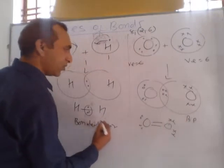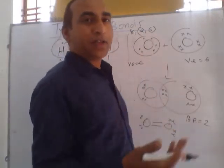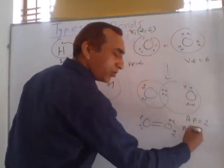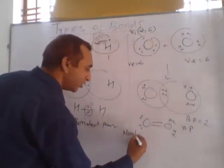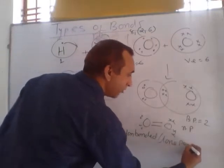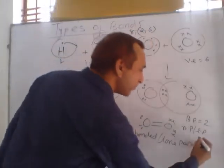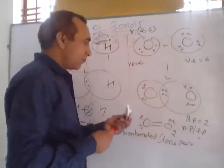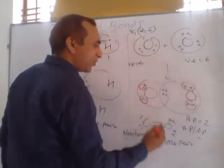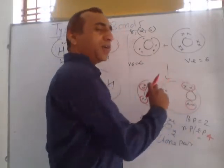So BP — bonded pair — there are two pairs (one and two). And remaining electrons — the valence electrons which do not take part in formation of bond — are called NP, non-bonded pair, otherwise LP, lone pair. The non-bonded pairs here are: one pair, second pair, third pair, fourth pair — so four non-bonded pairs. Which do not take part in formation of bond. So these are non-bonded pairs, but the bonded pairs form the double bond.